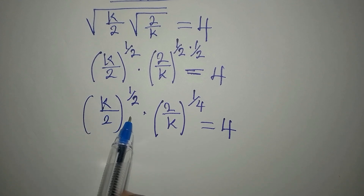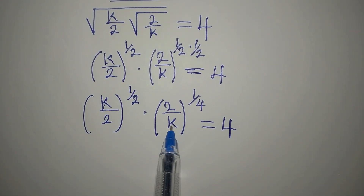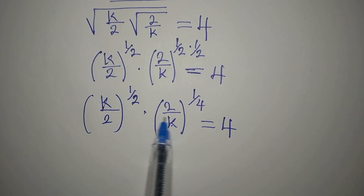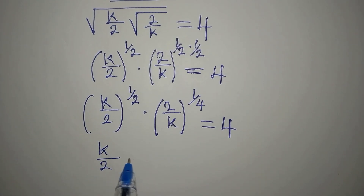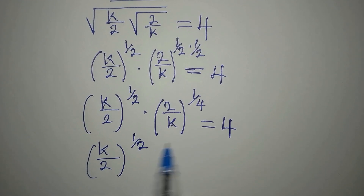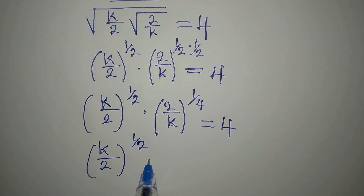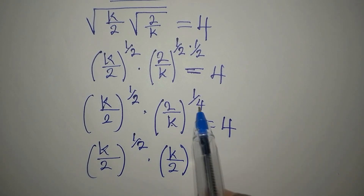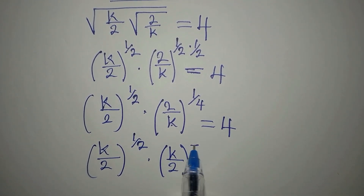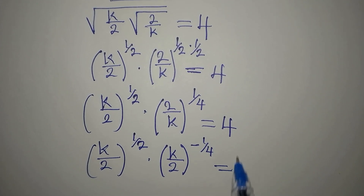Now, k over 2 and 2 over k are not the same base. So let me work on 2 over k — I can turn 2 over k into k over 2. The only thing that changes is the sign of the power: it goes from positive 1/4 to negative 1/4. On the other side we still have 4.